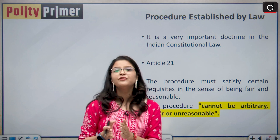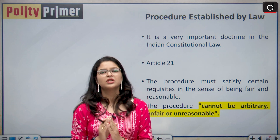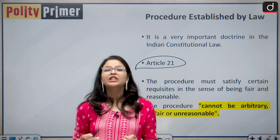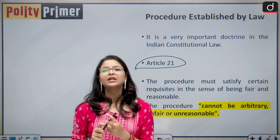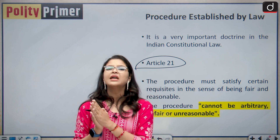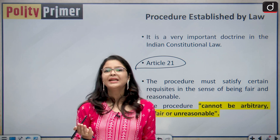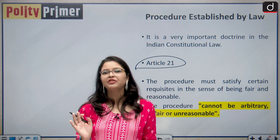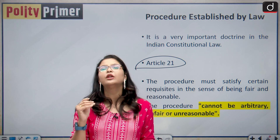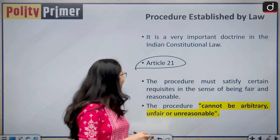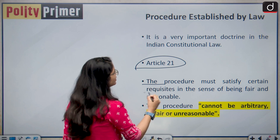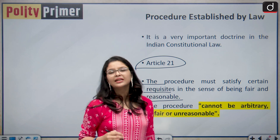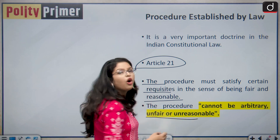Procedure Established by Law is a very important doctrine under the Indian Constitution. Article 21 states that no person shall be deprived of his life or personal liberty apart from the procedure established by law. Article 21 is not absolute — Parliament can deprive you of life and personal liberty, but the procedure established by law must be followed. That procedure must satisfy certain requisites of being fair and reasonable, and cannot be arbitrary, unfair, or unreasonable.